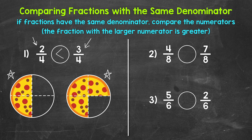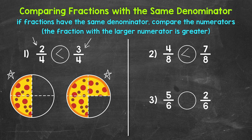Let's move on to number two, where we have four-eighths and seven-eighths. Reading from left to right: four-eighths is greater than, less than, or equal to seven-eighths. If we have the same size total divided into eight equal pieces, which is greater — four out of the eight total pieces, or seven out of the eight total pieces? Seven out of the eight total pieces — seven-eighths is greater. We have the same denominator, eight, so we just compare the numerators. Seven is greater than four, so our symbol opens up towards seven-eighths, and we read this as four-eighths is less than seven-eighths.